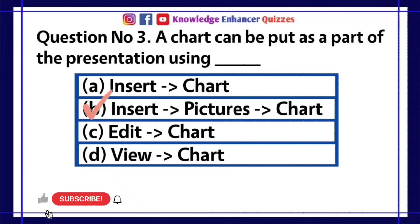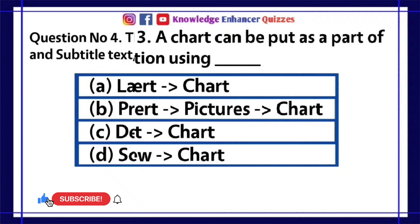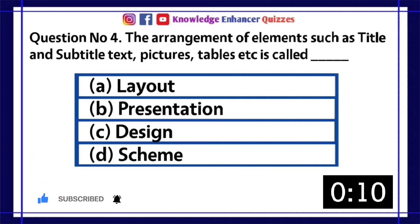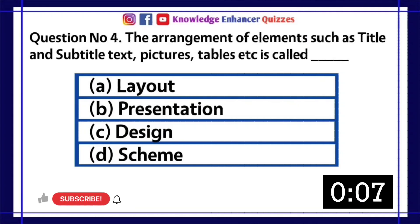Option B is the right answer. Question number 4. The arrangement of elements such as title and subtitle text, pictures, tables, etc. is called — A. Layout, B. Presentation, C. Design, D. Scheme.